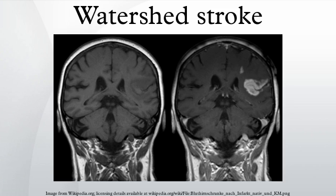Watershed strokes are seldom fatal, but they can lead to neuromuscular degeneration as well as dementia. This degeneration of the watershed regions of the brain can lead to difficulties with movement, motor coordination, and speech. Long-term care is focused around three areas: rehabilitative therapy, surgical interventions, and prevention of future watershed strokes.